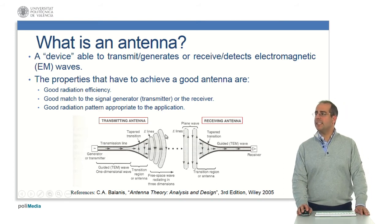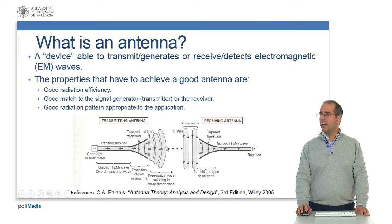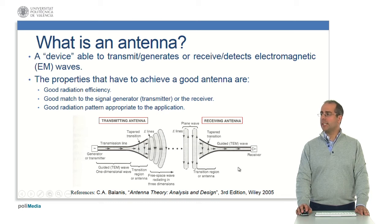So first, what is an antenna? An antenna is a device able to transmit, generate or receive, detect electromagnetic waves. The properties that a good antenna must achieve are: a good radiation efficiency, a good match to the signal generator between the transmitter and the transmitting antenna, and between the receiving antenna and the receiver. And also a good radiation pattern appropriate to the application.